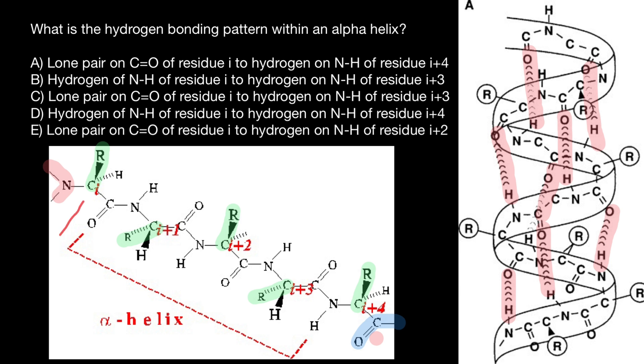With I here, we designate the first amino acid. Then second would be I plus one, and third is going to be I plus two, and the fourth is going to be I plus three, and the fifth is going to be I plus four. Again, one, two, three, four, and five.